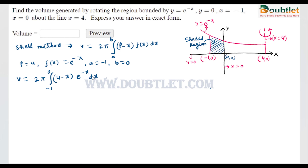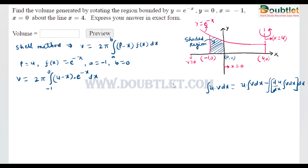Now we will put these values into the integral: from -1 to 0 of (4 - x) · e^(-x) dx. To solve this integral we will use the u·v method of integration. If u and v are functions of x, we integrate u as-is times the integral of v, then subtract the integral of [derivative of u times integral of v]. We treat (4 - x) as u and e^(-x) as v, so u(x) = 4 - x and v(x) = e^(-x).